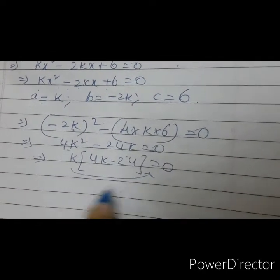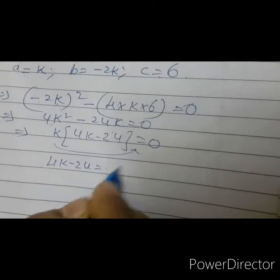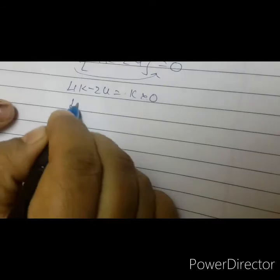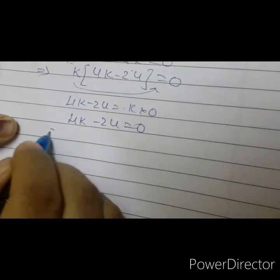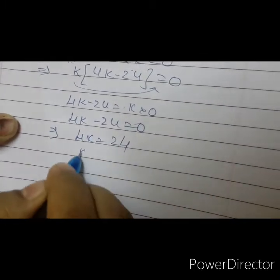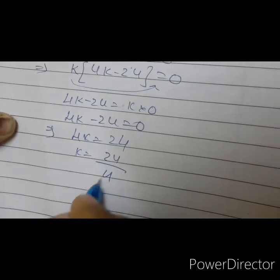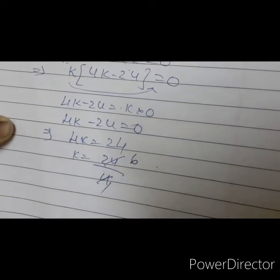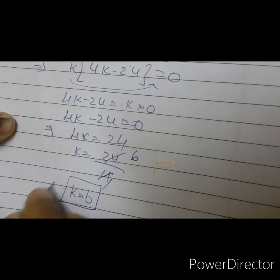K is common, so: K into (4K minus 24) equals to 0. Either K equals to 0 — which gives 0 — or 4K minus 24 equals to 0. So 4K equals to 24, K equals to 24 divided by 4. Therefore K equals to 6. Thank you.